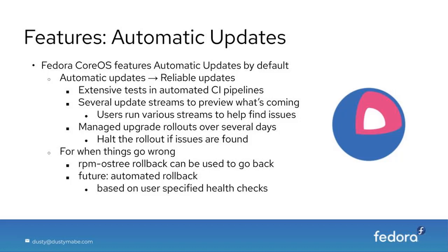For when things go wrong, we have RPM-OSTree rollback, which can be used to go back to the previous version. In the future, we plan to have automated rollback functionality where a user can specify that if a particular health check doesn't pass, it should automatically go back to the previous version before the update. That's a future feature, not something we have just yet.